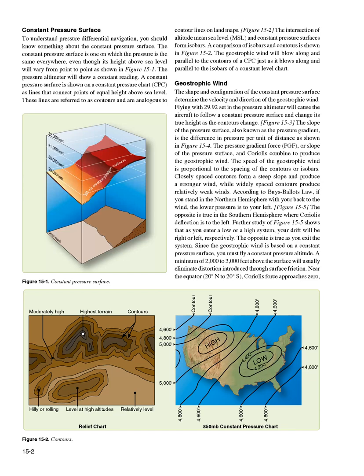To understand pressure differential navigation, you should know something about the constant pressure surface. The constant pressure surface is one on which the pressure is the same everywhere, even though its height above sea level will vary from point to point as shown in Figure 15-1. A constant pressure surface is shown on a constant pressure chart (CPC) as lines that connect points of equal height above sea level. These lines are referred to as contours and are analogous to contour lines on land maps.